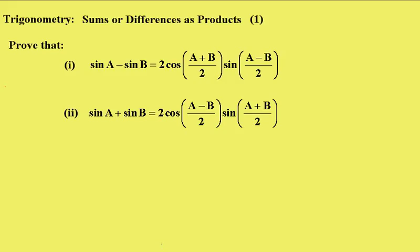Trigonometry. Sums or differences as products. Number 1. First of all we have to prove that sin A minus sin B equals 2 cos of A plus B on 2, sin of A minus B on 2, and then sin A plus sin B equals 2 cos of A minus B on 2, sin of A plus B on 2. These are both very important identities when it comes to the differentiation of sin and cos.